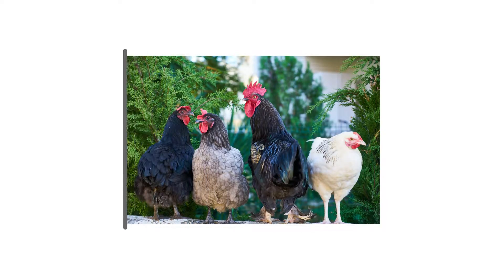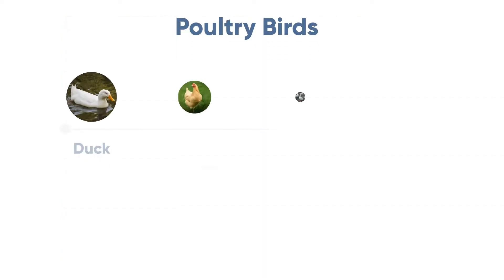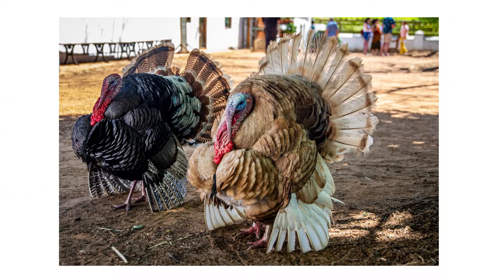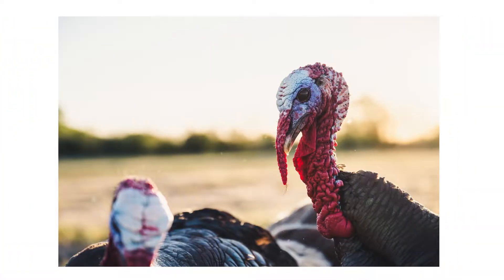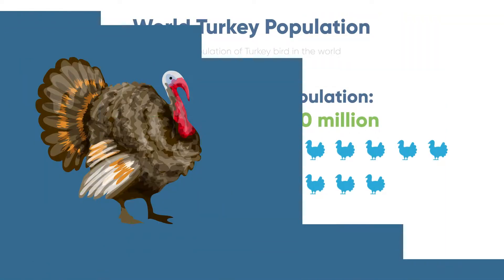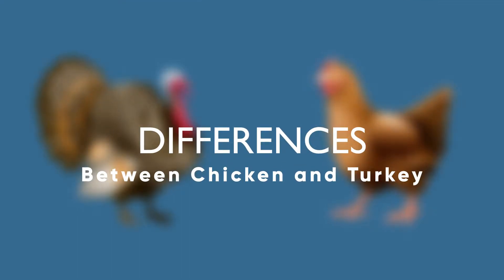When you hear the term poultry, usually this picture comes into our minds. However, there are a lot of other birds that fall under this category, most notably turkey. It is one of the most common poultry birds with a population of over 450 million throughout the world. Today we are going to talk about the differences between the two most common poultry birds — chicken and turkey.